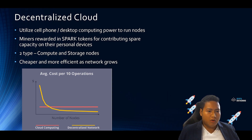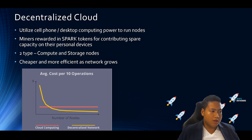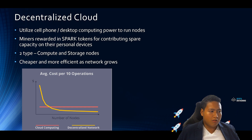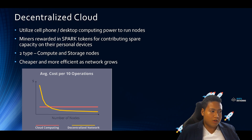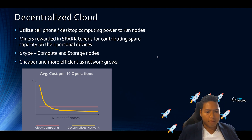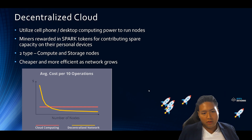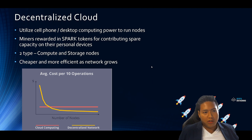The decentralized cloud will be cheaper and more efficient as the network grows, comparing this to traditional cloud computing services such as Microsoft and Amazon. The traditional cloud computing cost remains constant, while decentralized network costs become cheaper as the network grows. This is due to traditional cloud providers requiring rack space, cooling, dedicated hardware, and networking infrastructure. You can see from the chart that traditional cost is constant, but for decentralized, the more users and nodes there are, the cheaper it gets and the more efficient it becomes.